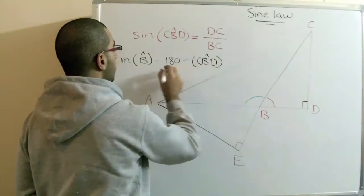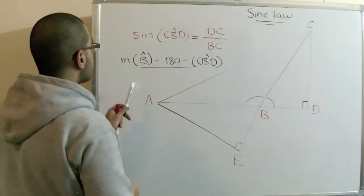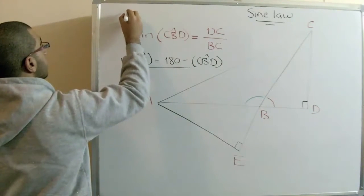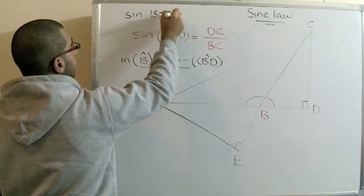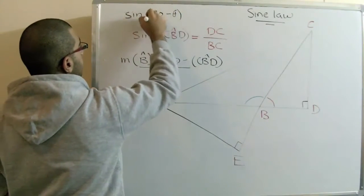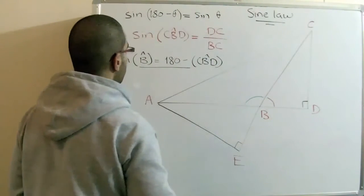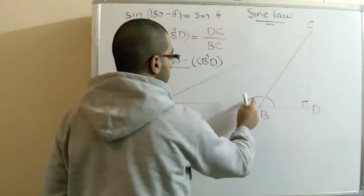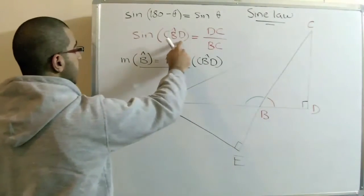Here we use a rule that we knew in the last video. Sin of 180 minus theta equals sin theta. So, sin measure angle B equals sin measure angle CBD.